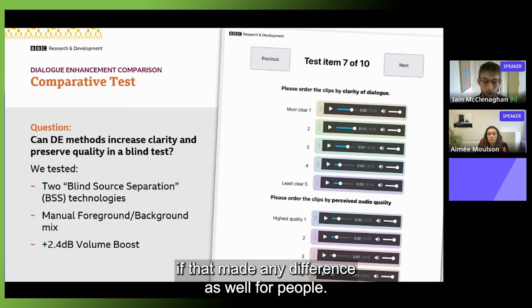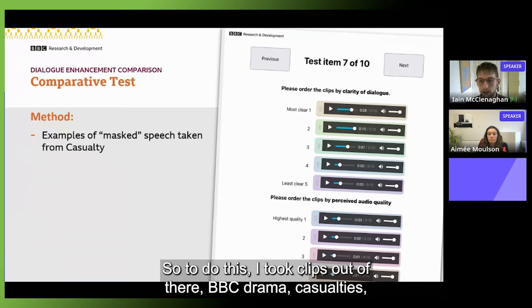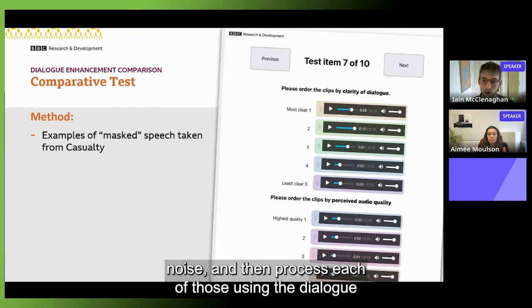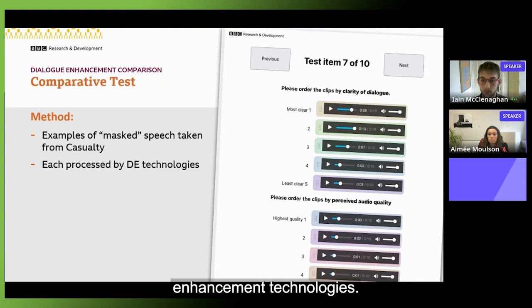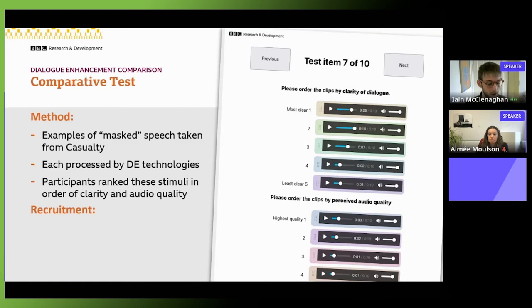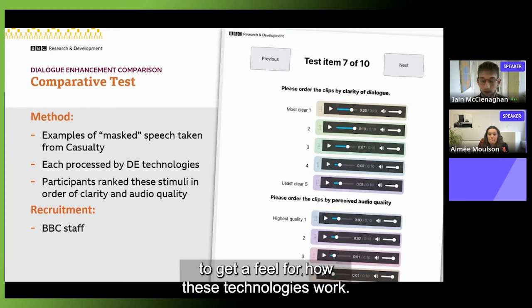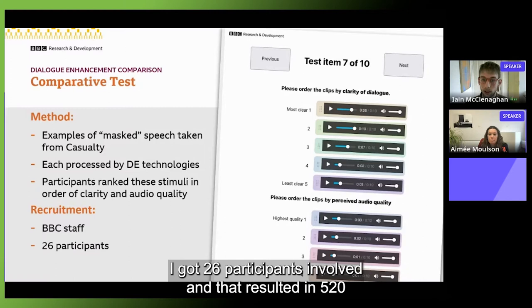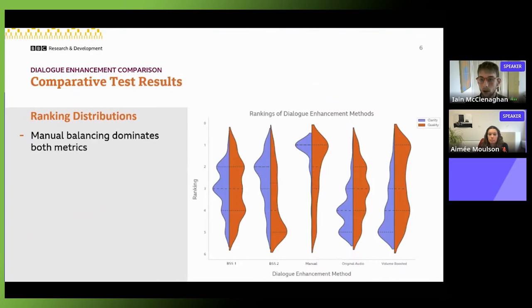So to do that we used two different blind source separation technologies, we also included a manual foreground background mix, so that was a during production approach made by a sound engineer to be an accessible mix, and then we also included the original audio but boosted in volume because that's the option most people currently have available to them and wanted to see if that made any difference as well for people. So to do this I took clips out of the BBC drama Casualty, just a hospital drama. I took segments where the speech was masked by background noise and then processed each of those using the dialogue enhancement technologies. I then got participants to rank these audio stimuli in order of clarity and the perceived audio quality.